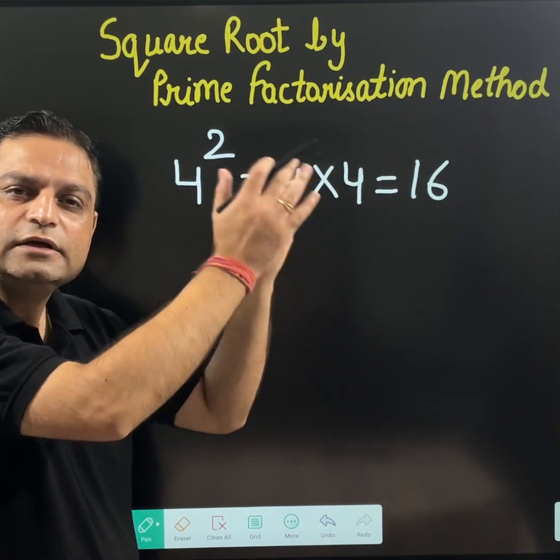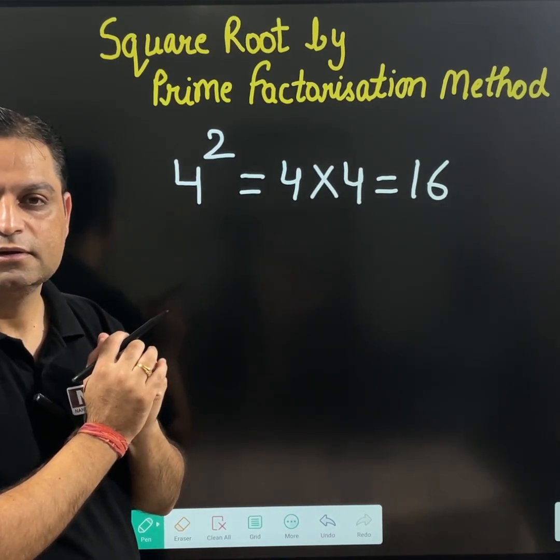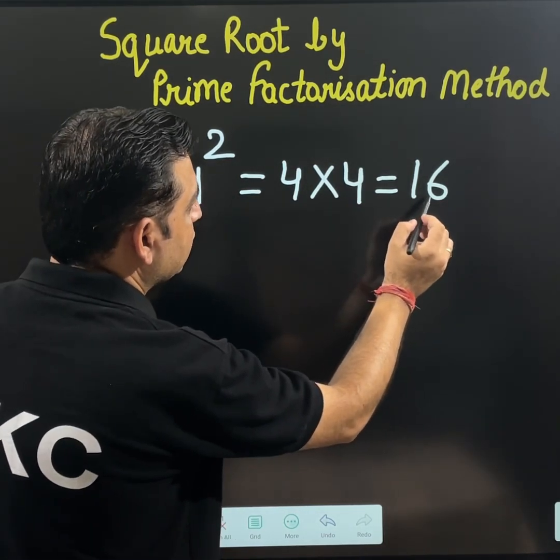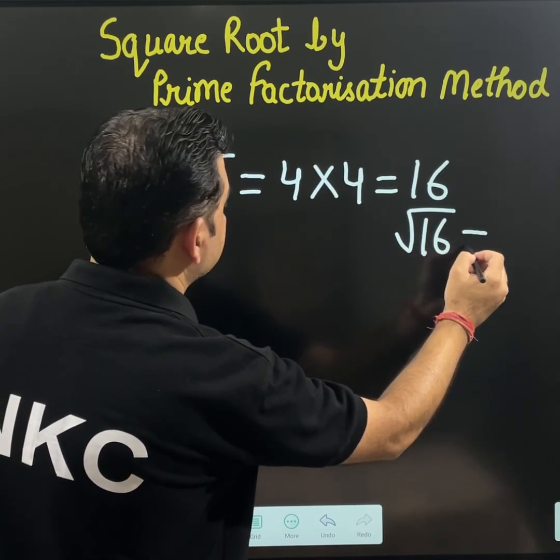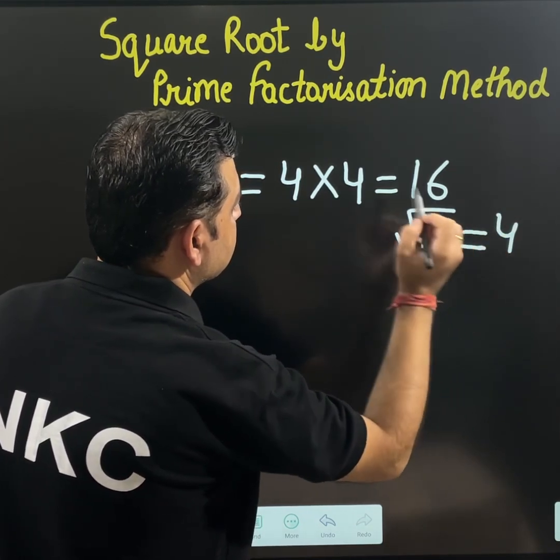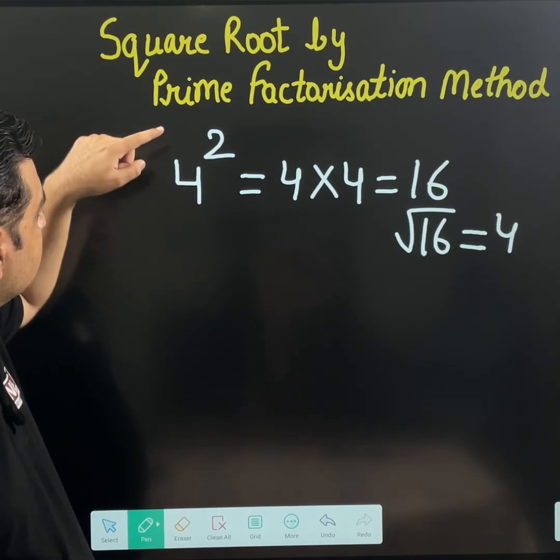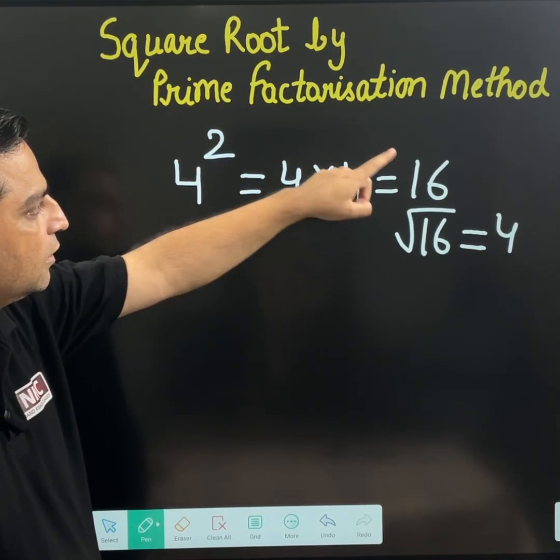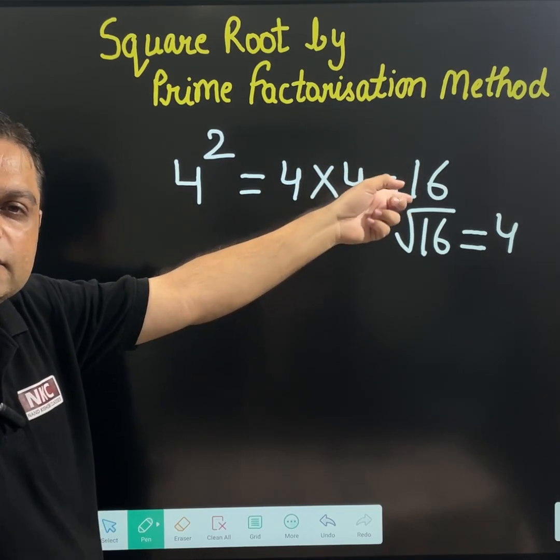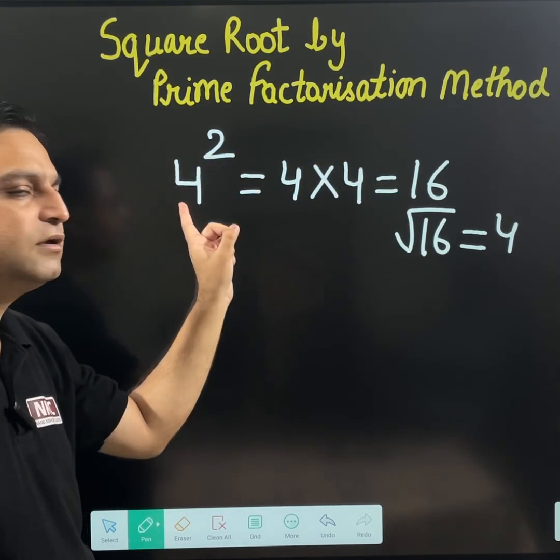Now square root is a reverse process. Reverse means square root of 16 is equal to 4. Try to understand it now. When I did square of 4, I got 16. If I do square root of 16, I will get 4.